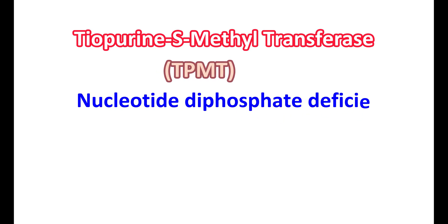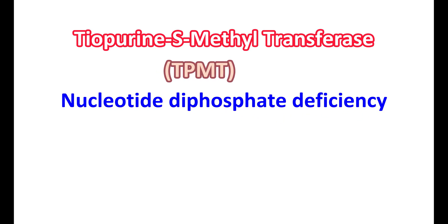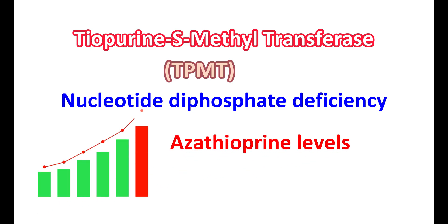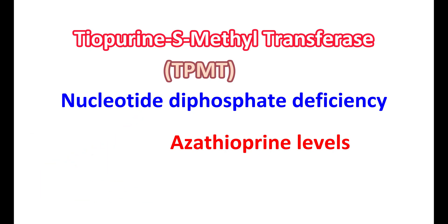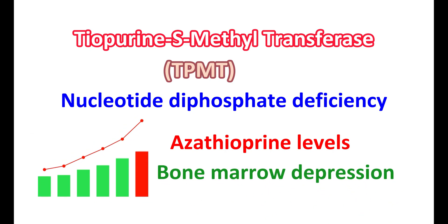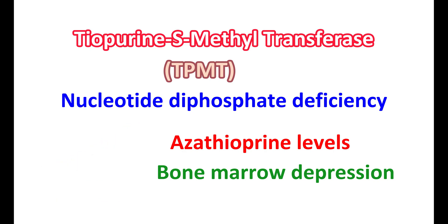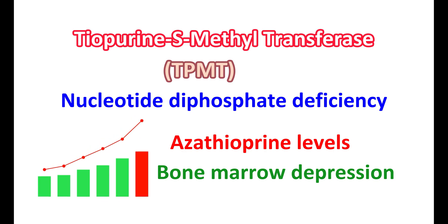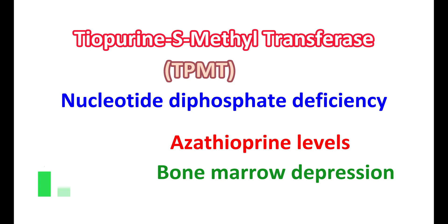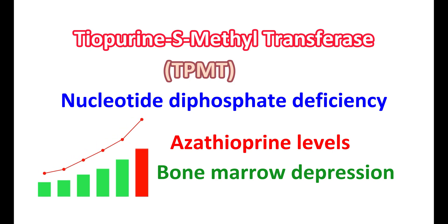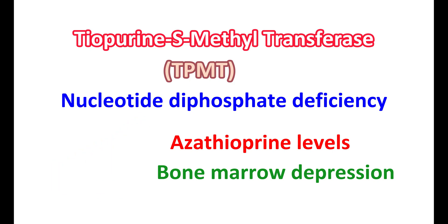In people with thiopurine methyltransferase (TPMT) or nucleotide diphosphatase deficiency, the risk of myelotoxicity increases. This enzyme is responsible for the breakdown of thiopurine drugs. In people deficient in this enzyme, azathioprine levels are abnormally elevated, leading to toxic effects and significant bone marrow depression. Therefore, in cases of severe myelosuppression, testing for TPMT deficiency should be done. However, TPMT testing cannot substitute for complete blood count — regular CBC should still be done.